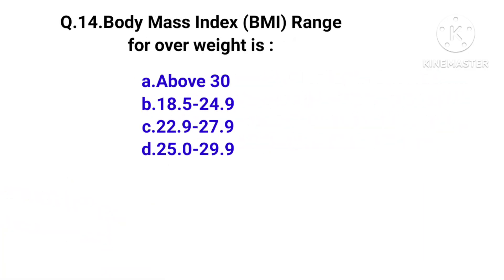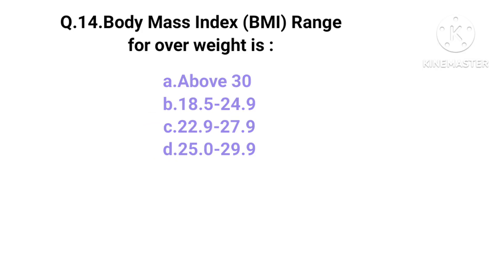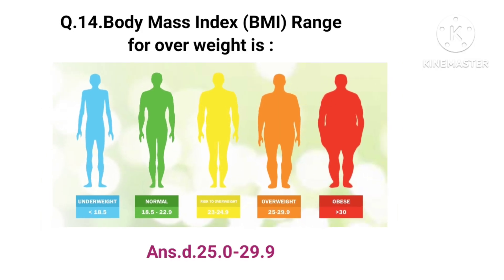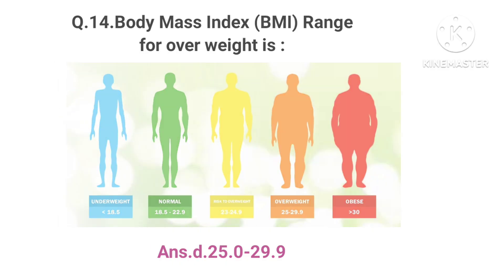The Body Mass Index (BMI) range for overweight is 25.0 to 29.9. The options were: above 30, 18.5 to 24.9, 22.9 to 27.9, or 25.0 to 29.9. The right answer is option D — 25.0 to 29.9.